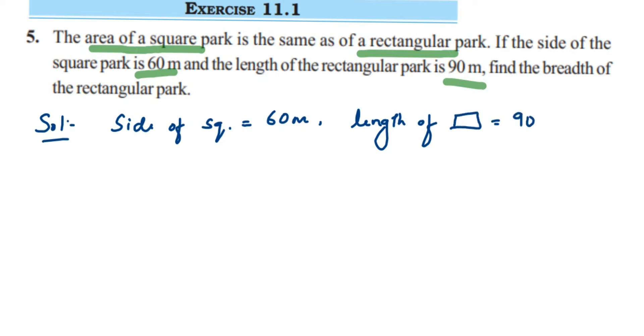The rectangular park is 90 meters. We have the given relation that area of square is equal to area of square park equals area of rectangular park. So let us write down that: area of square park is equal to area of rectangle park.